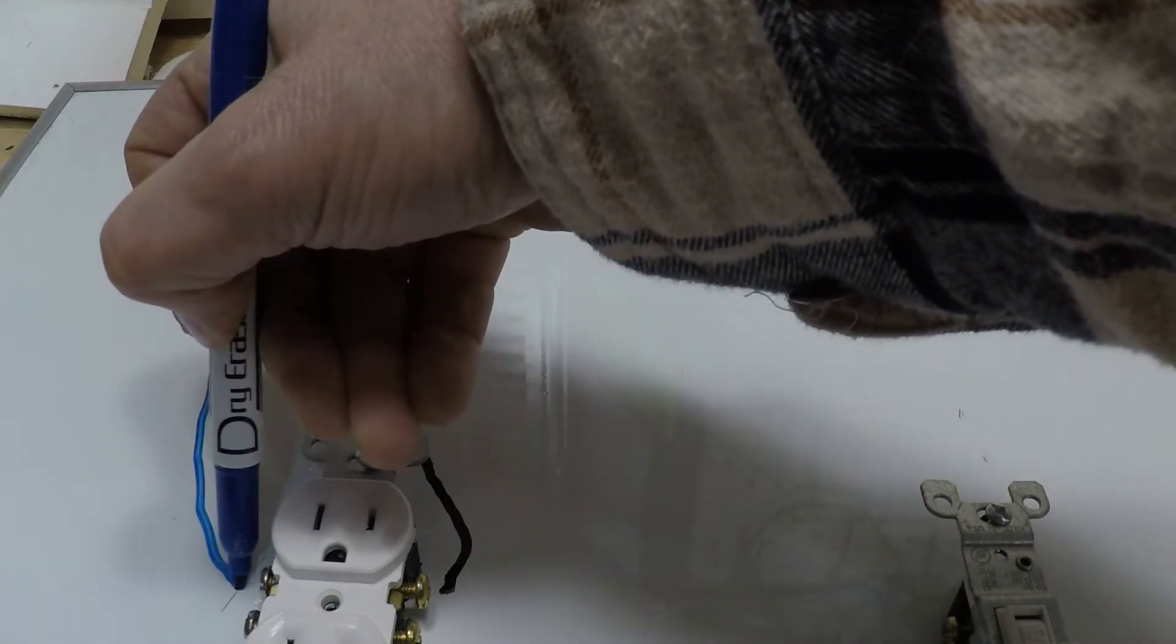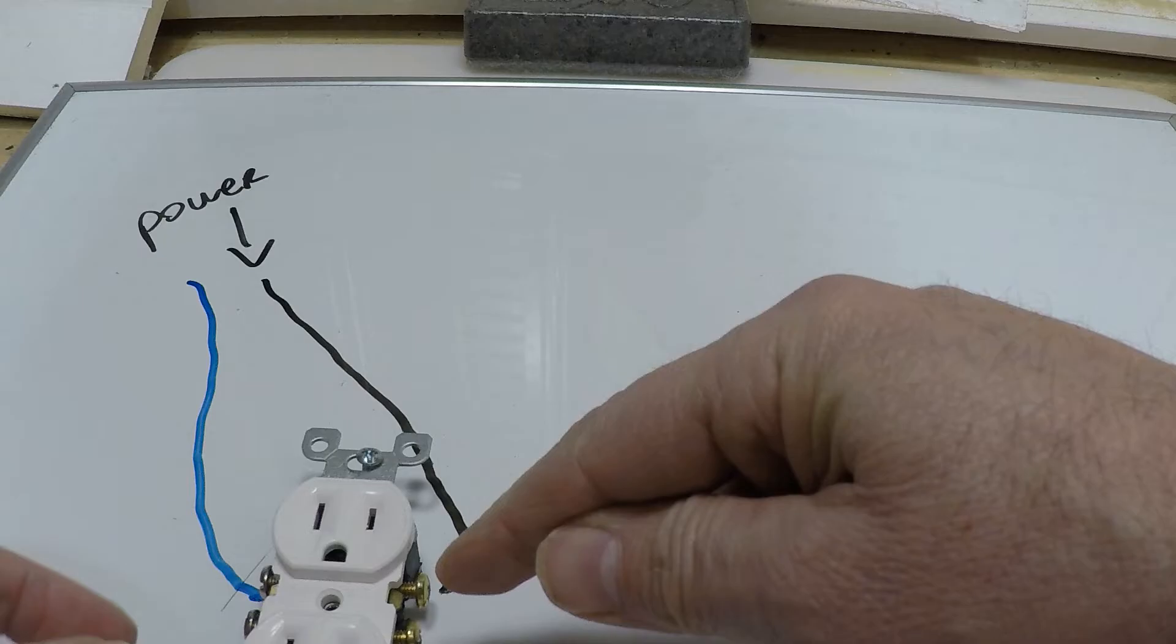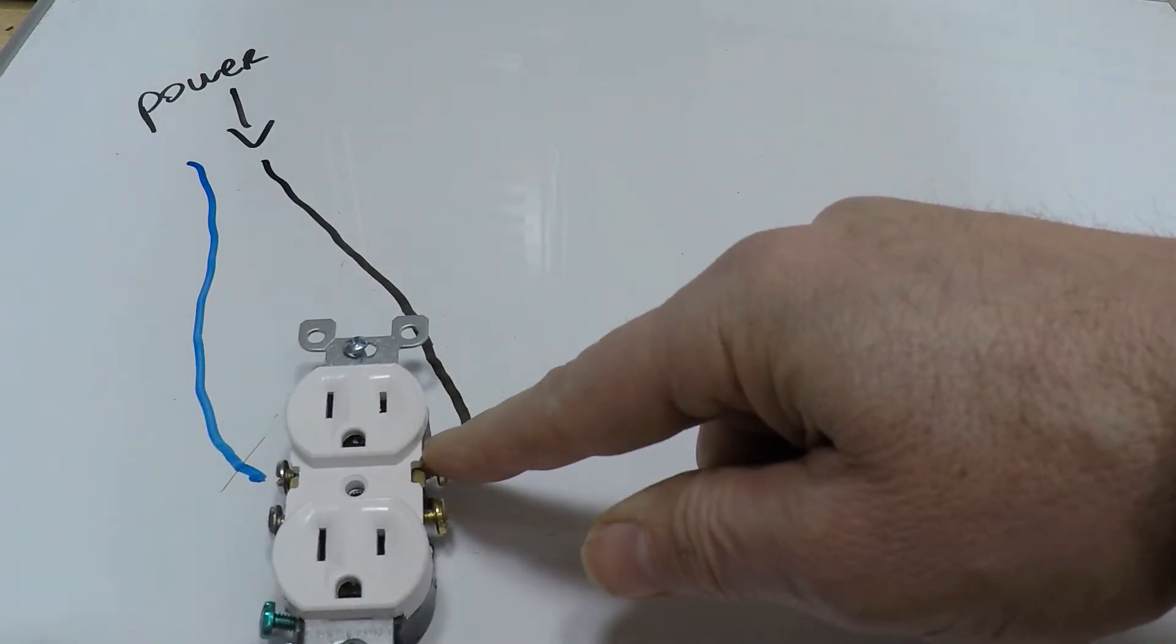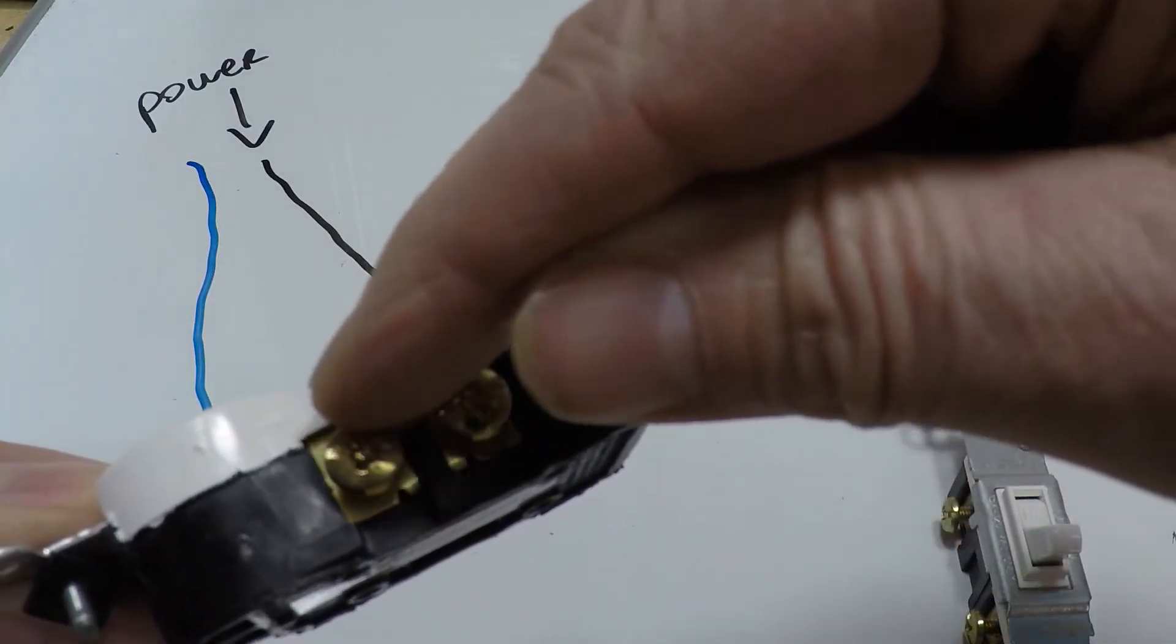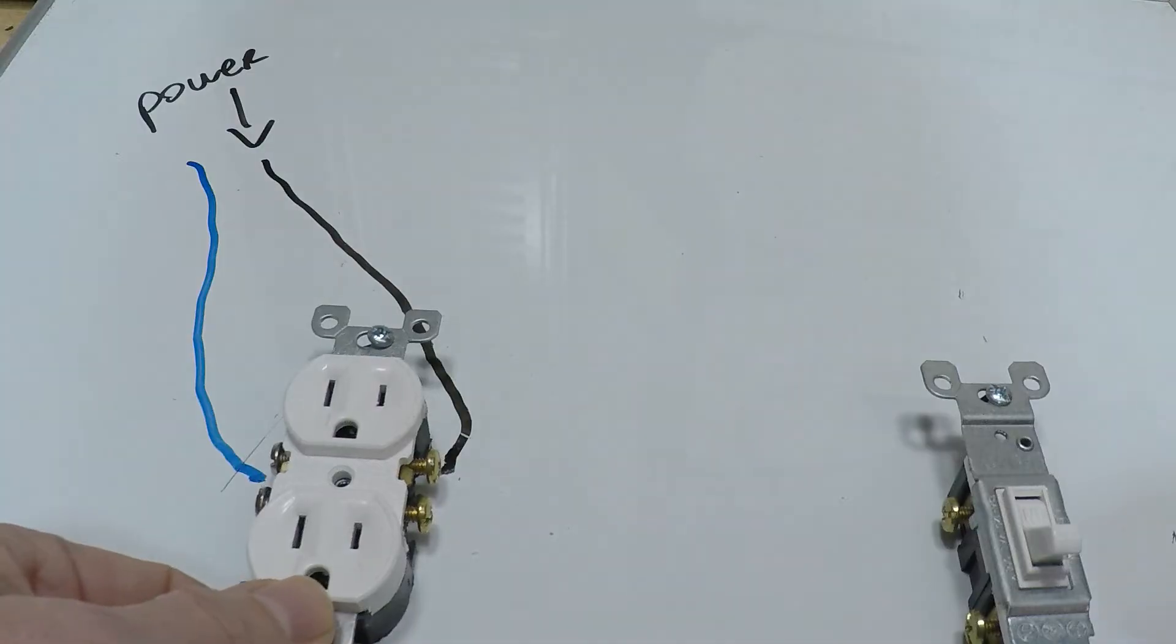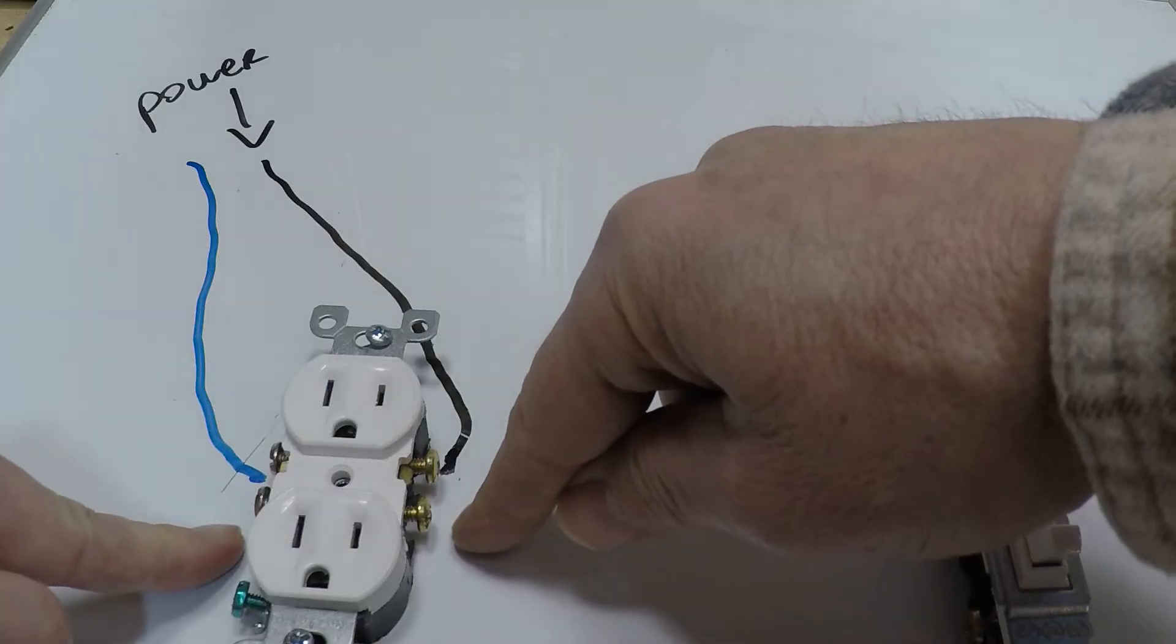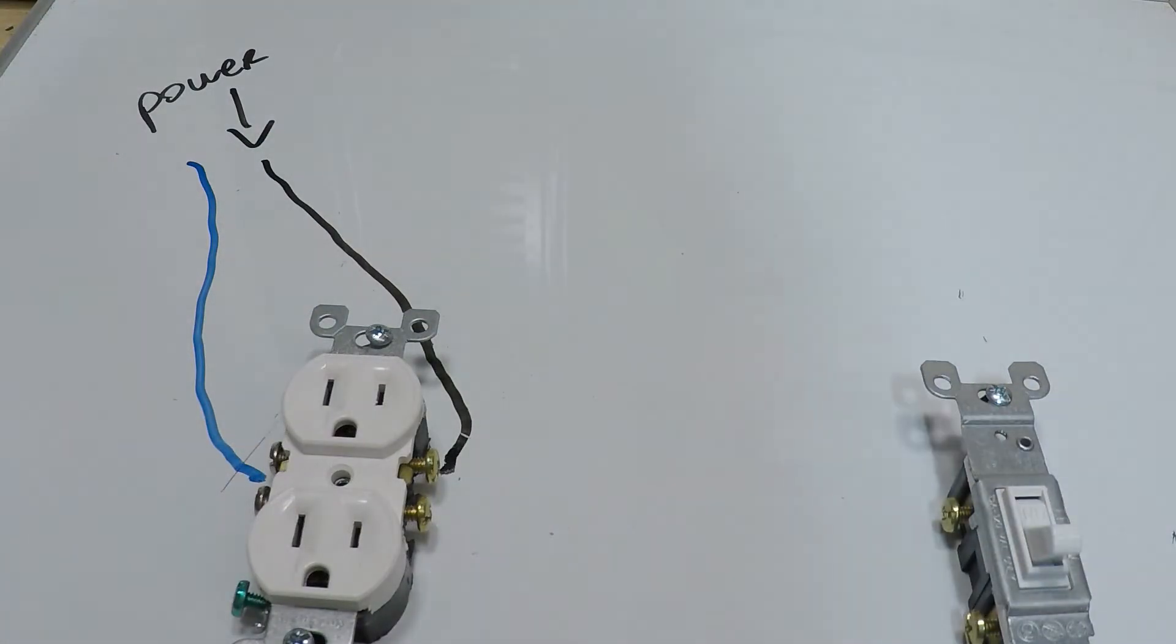If this piece was connected, like I just showed you—this little piece here in between—both the top and the bottom would get power because the power would flow from here down to the next one. And then if you wanted to, you can attach another black and a white wire and go to the next outlet in the room, and so forth.